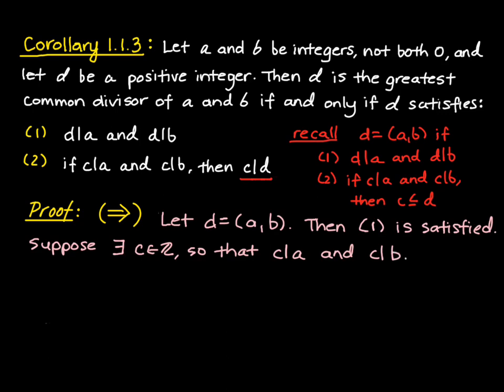Well, using the definition of division, this means that we can write A as C times K, and B as C times L for some integers K and L.